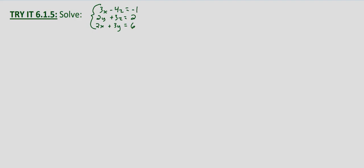The process is the same: eliminate a variable, then eliminate another variable, and solve for one of the variables in doing so. You can choose any two equations that you want. I'm going to use the first and third equations and eliminate the x variable. So we have 3x — I'm going to put in a 0y. You can skip that space as long as you do the calculations correctly, but I always put a 0 where there isn't a variable.